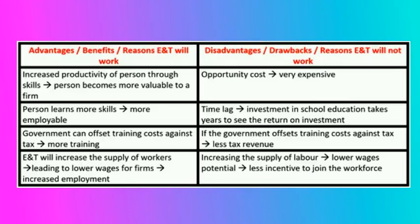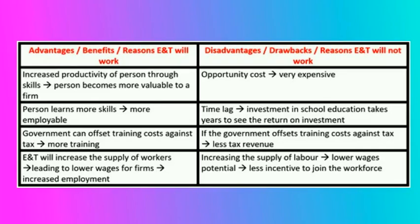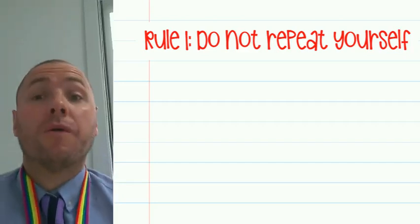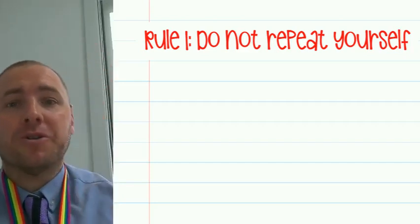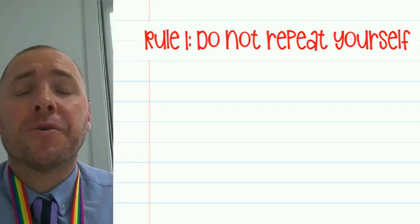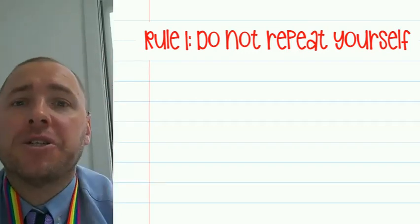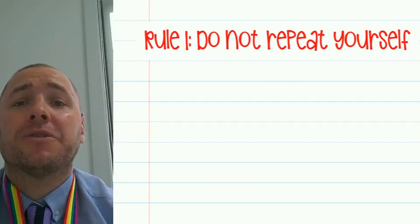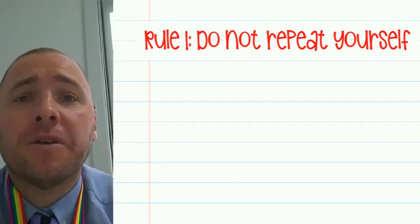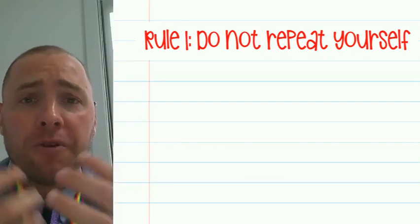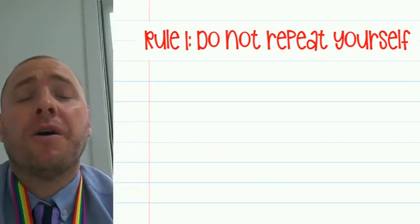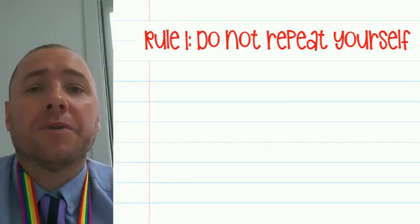Here are some of the analytical points you could have used. I've not included context in this video — you will need to include context and application. And finally, the mark scheme rule number one: do not repeat yourself in the conclusion. Add something new. You've already told the examiner the benefits and drawbacks of education and training — they do not want to hear that again. Now is the time to add something new and really impress the examiner, so they know you are a level 9 or A-star grade economics student.